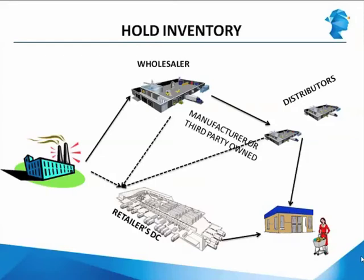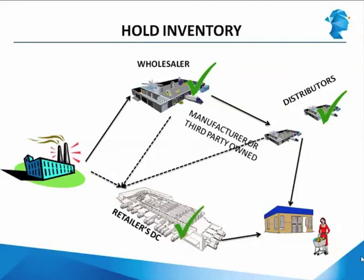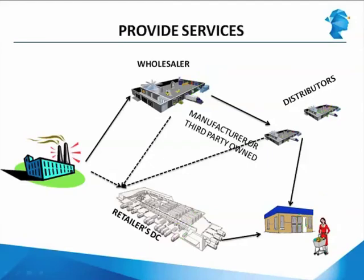The next role is holding inventory. Holding inventory means that a player holds the inventory for the next player in the value chain, so that whenever the next player needs items in the quantities it wants, it can receive them. All four players play this role. The wholesaler holds inventory for the distributors. The distributors hold inventory for the stores. In the retailer's value chain, the retailer's distribution center holds inventory for all the stores it serves. Finally, the stores hold inventory for us, the customers.